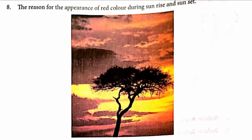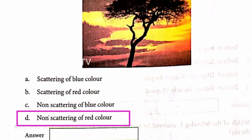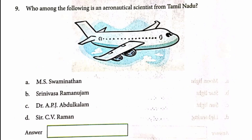The reason for the appearance of red color during sunrise and sunset is due to the scattering of light by particles in air.